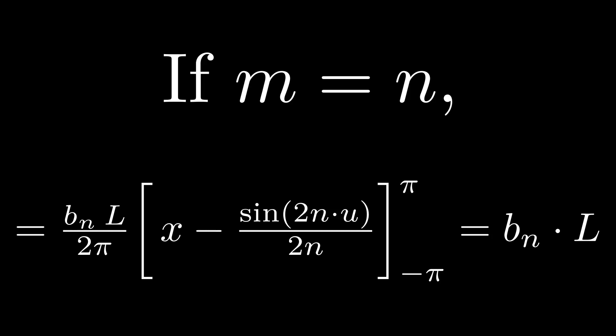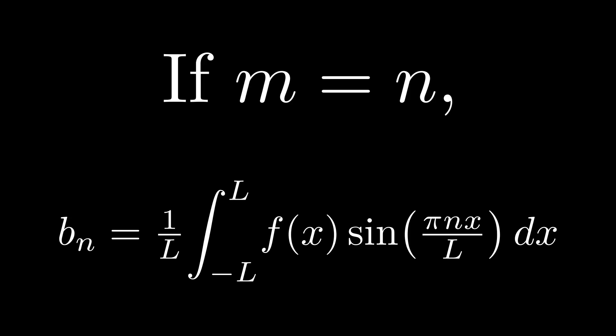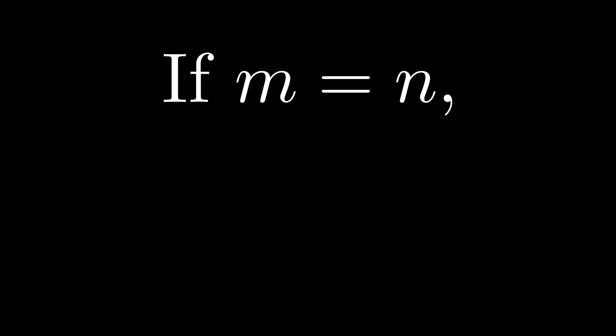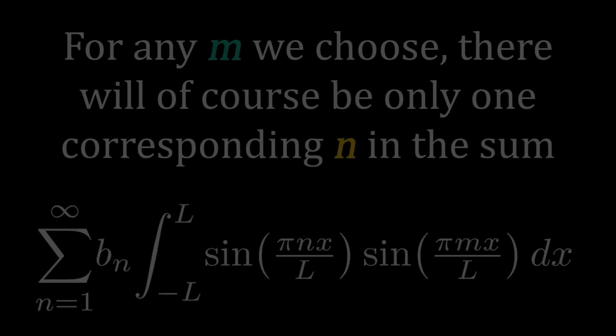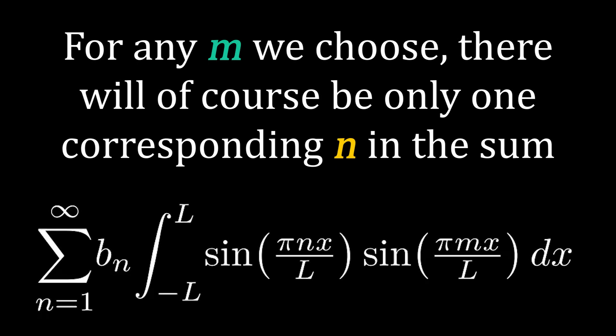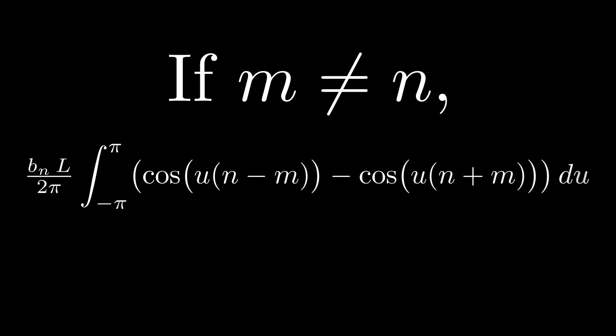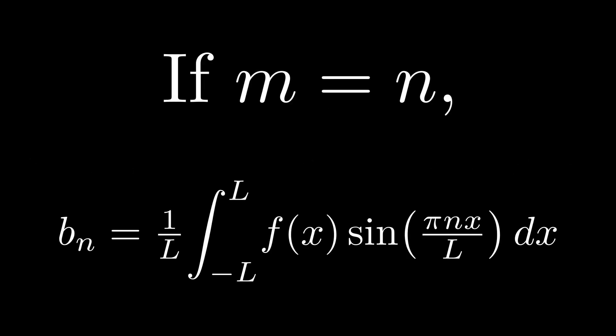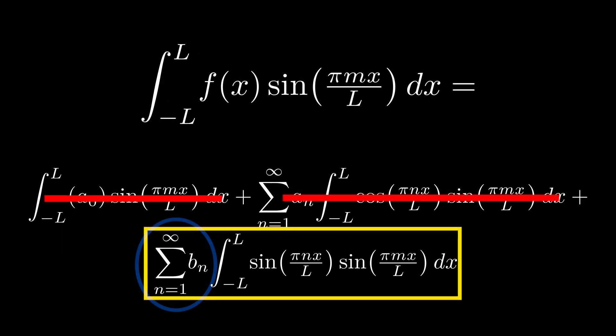If we then solve for b sub n, we get the following formula. b sub n is equal to 1 over l times the integral of f of x times sine of pi nx over l dx. So what about when m does not equal n? There's obviously only one term for which m and n can be equal. So when they aren't equal, we can evaluate this general integral, and it's going to account for every term for which m and n are not equal. That accounts for every other term in the infinite sum. Now if you evaluate this integral, you'll find that it equals 0. Now I'm not evaluating this one in the video, but it's not hard to find that it vanishes when m does not equal n. This means that no matter what positive integer value of n we choose, b sub n will always be equal to the formula we found, because all other terms in the sum will vanish when integrated.